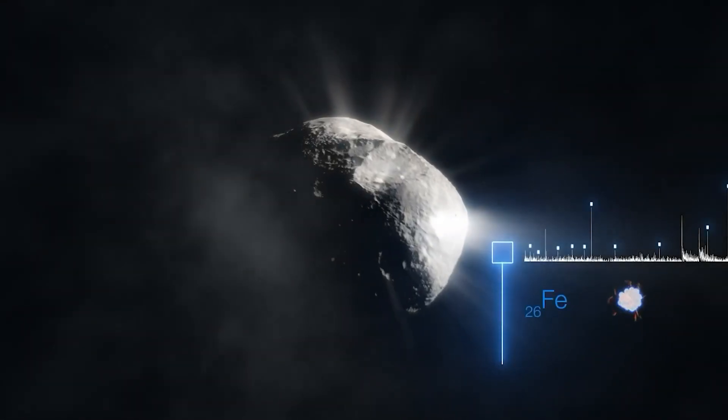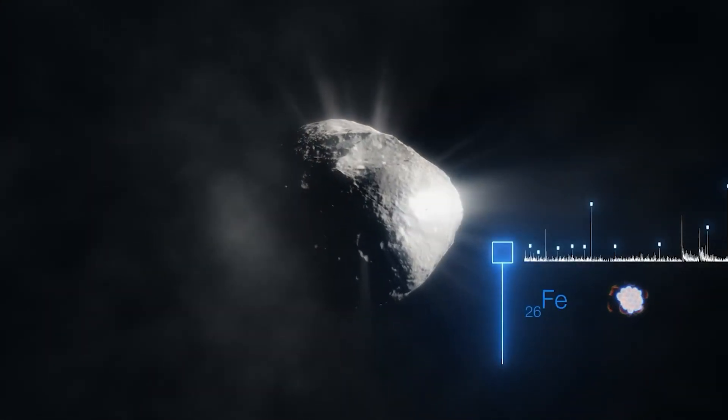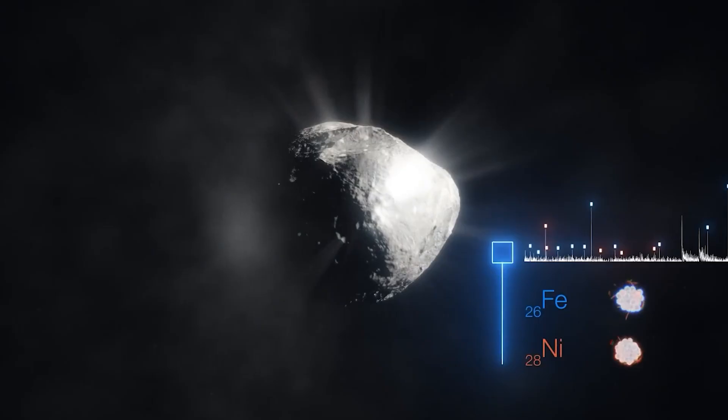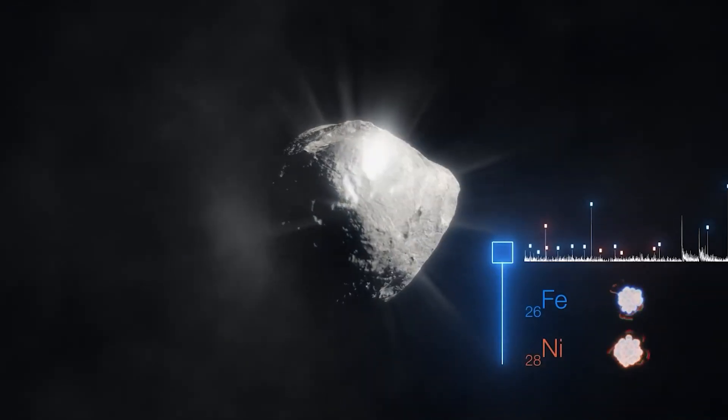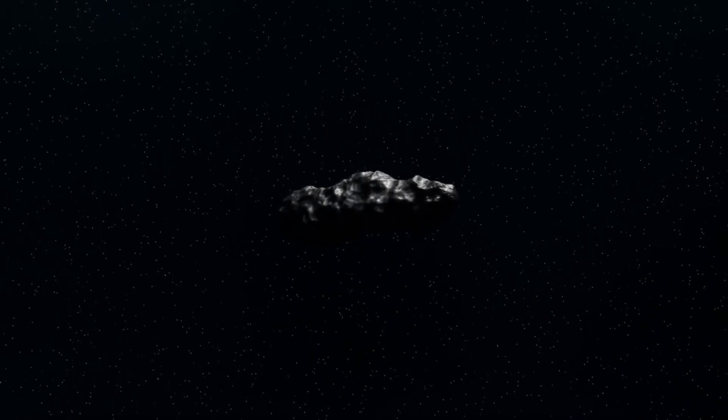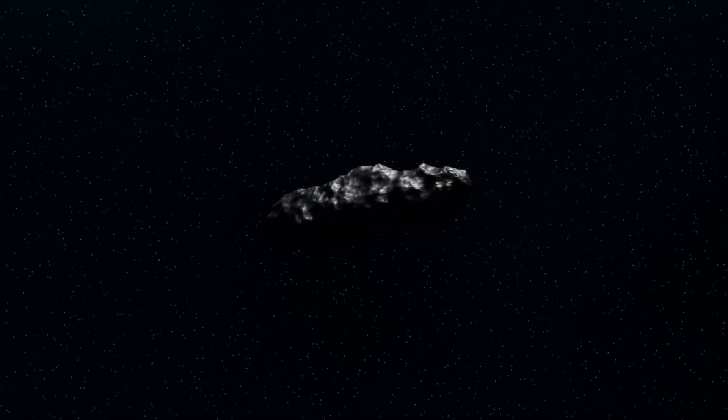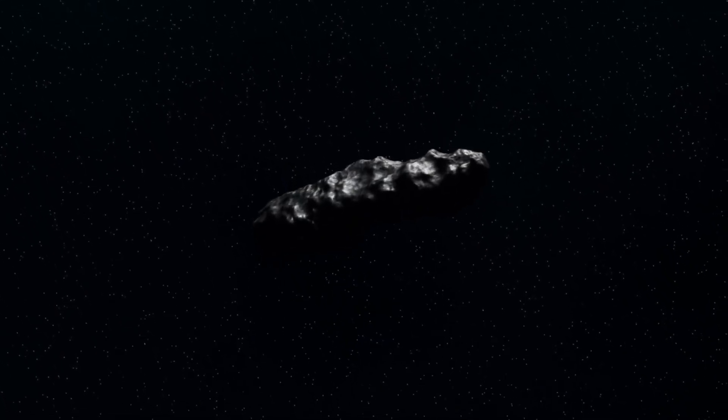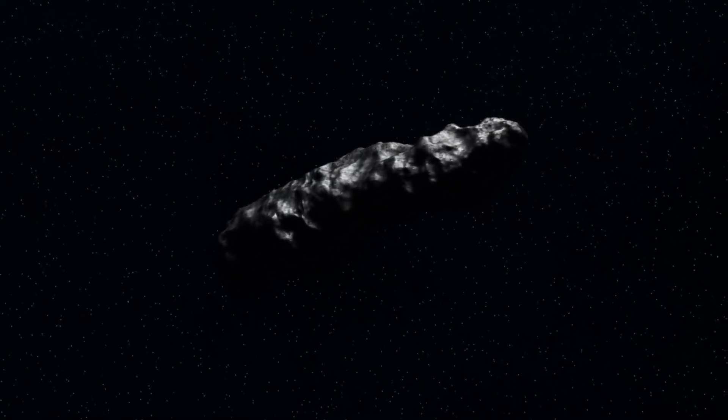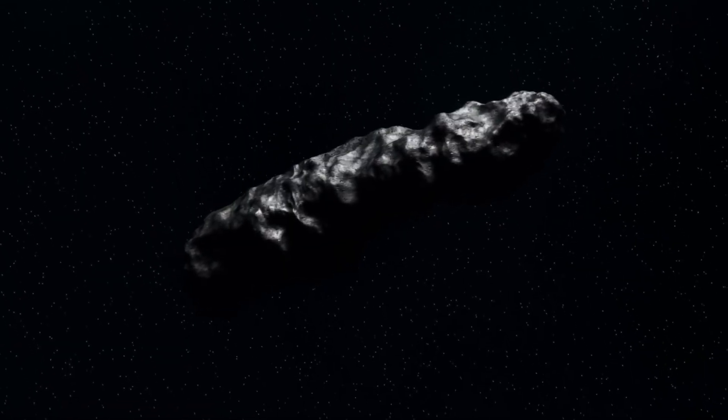Is sunlight unlocking alien ices buried deep within the core? Is it a runaway release of volatile gases never before observed in comets from our neighborhood? Or is it something stranger, a process yet to be identified, emerging only because this object was forged in a different star system, with chemistry we have never encountered?